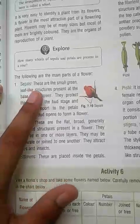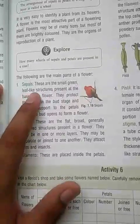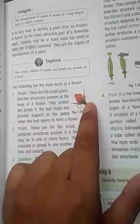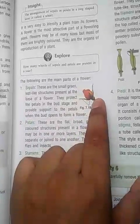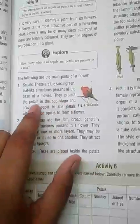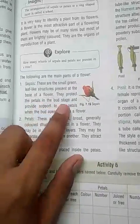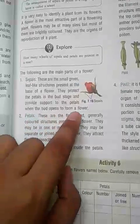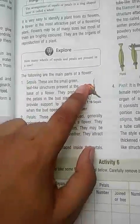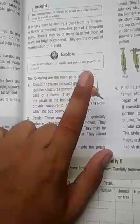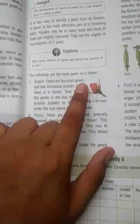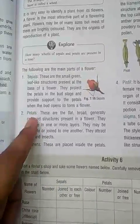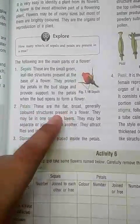First is the sepal. Sepals are the small green leaf-like structures present at the base of the flower. They protect the petals in the bud stage and provide support to the petals when the flower opens. Next are petals. Petals are the flat, broadly colored structures present in the flower.